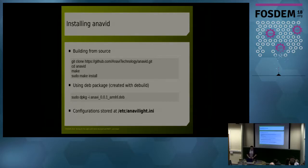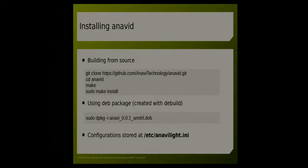For the installation of ANAVId daemon, there are two ways. The first is to build from source code, which is what I do, but obviously it's not very convenient. So I decided to make a Debian package using dbuild, and the installation comes down to a single line. After installing it, there is a configuration file. You can skip it and it will work with default configurations, which probably means it won't work in your setup — you do have to configure it in that file.